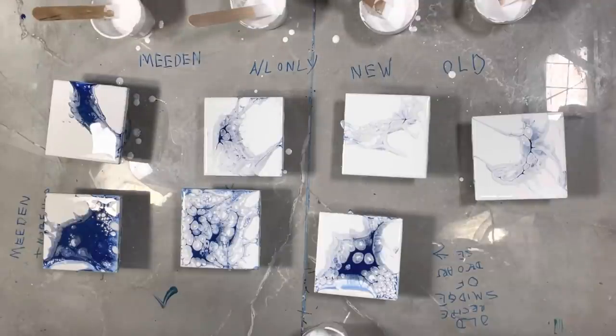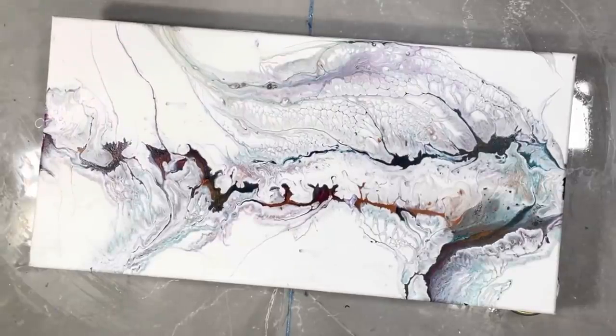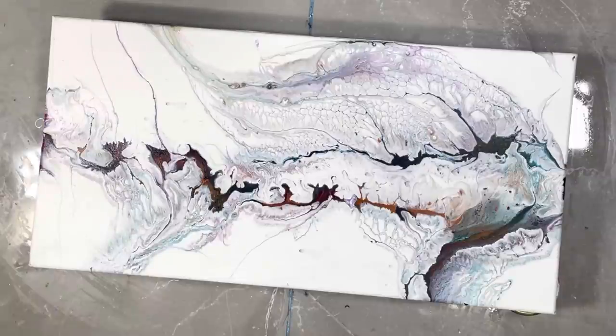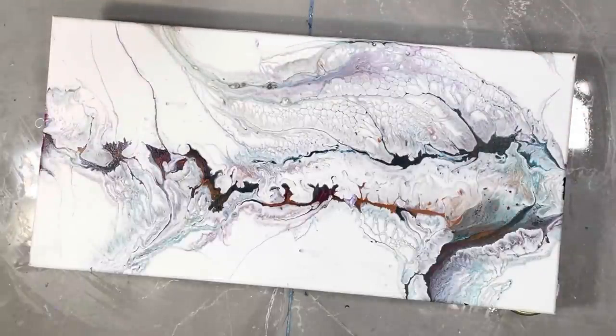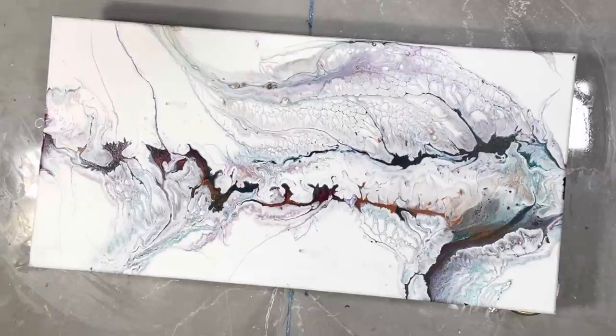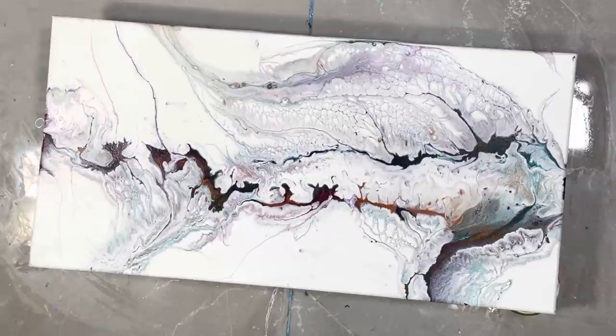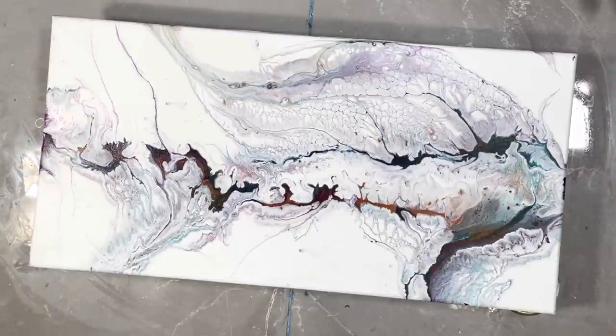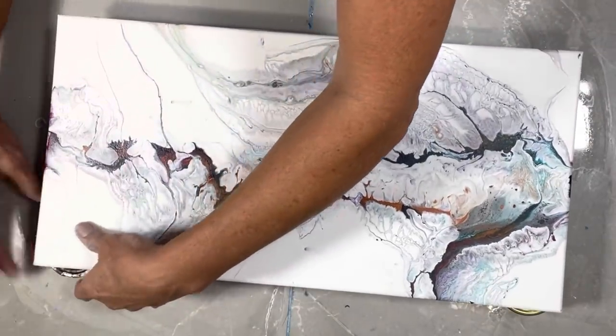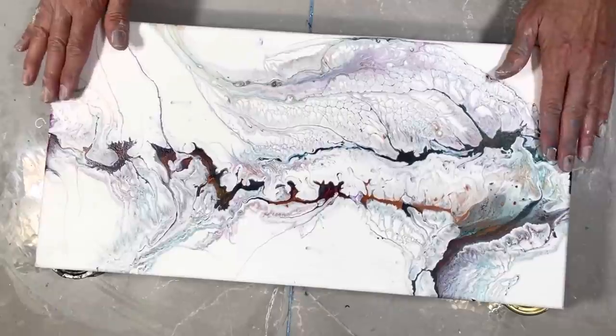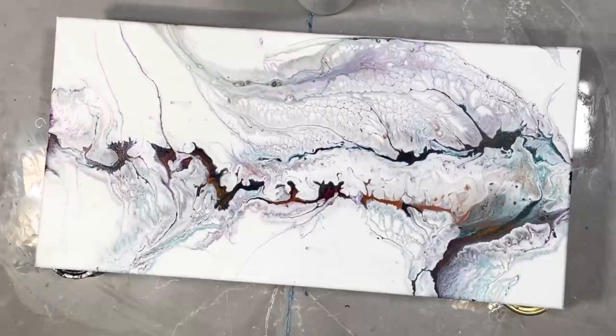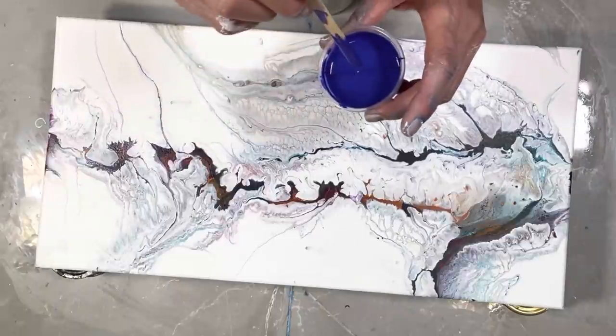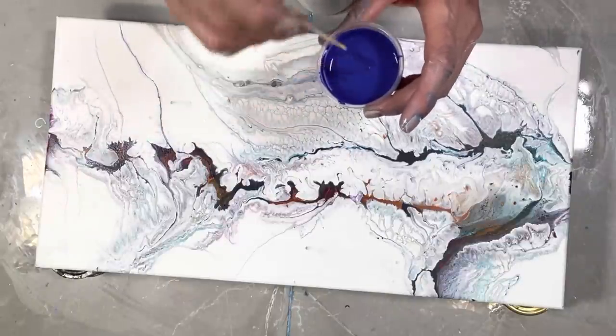All right guys, so this is the painting that things started to go south on, with splitting and stuff like that. So let's see how the Artist's Loft only recipe does. I'll post the new recipe or the Artist's Loft recipe in the description if this all works. So this is an old canvas. I did level it. This is the new mix with no DecoArt.